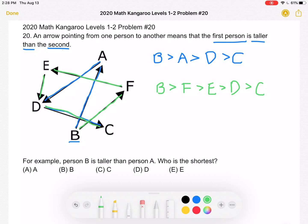So by looking at these two lines we've written over here, we can see that person C is at the end of both of them. And if we just want to double check our work to make sure that person C is the shortest, we can see that person C is shorter than person A, B, D, E, F. They're shorter than all the other five people.